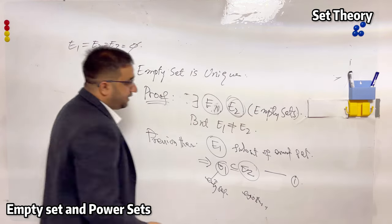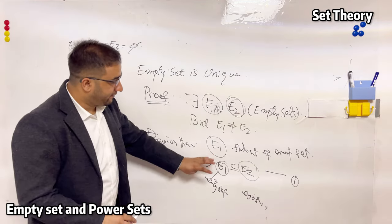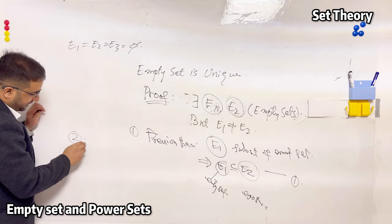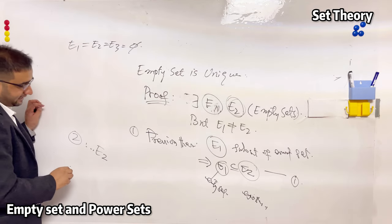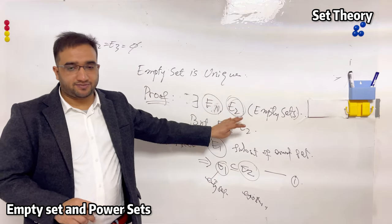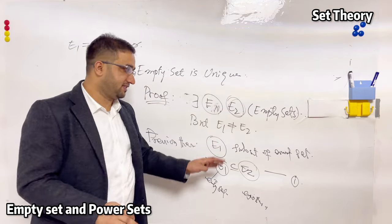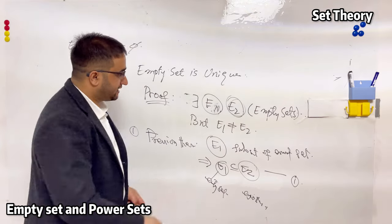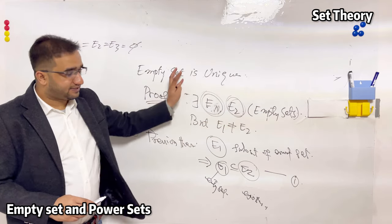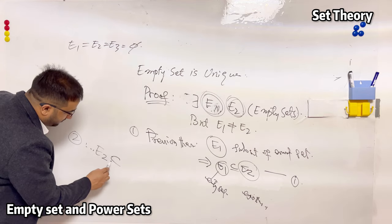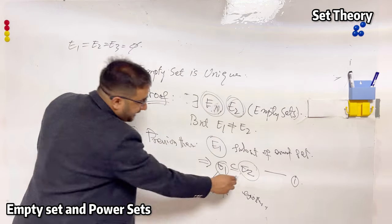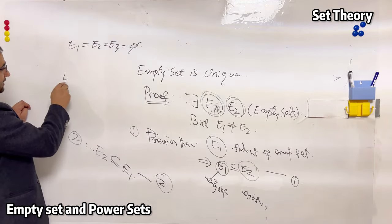Now forget about E1 for the moment and pick up E2 as the empty set. Again using the previous theorem, E2 is an empty set, so it is a subset of any other set in the universe. Therefore, E2 is also a subset of E1. This gives us equation 2.